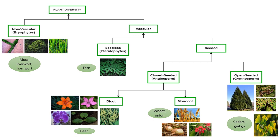Before explaining gymnosperms, first we recall the flowchart of plant classification. As we all know, plants are broadly divided into two groups: non-vascular and vascular plants. In non-vascular plants we have bryophytes — they grow in moist places and are called amphibians of the plant kingdom, as they grow on land but need water for reproduction. On the other hand, vascular plants are divided into seedless vascular and seed vascular plants.